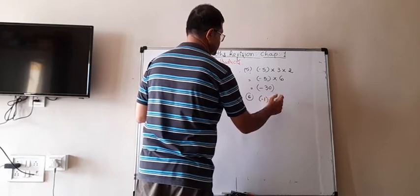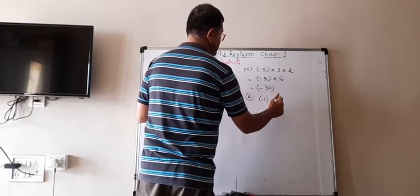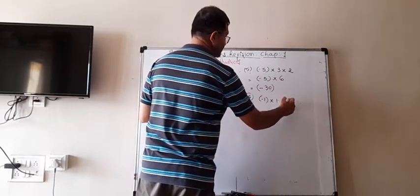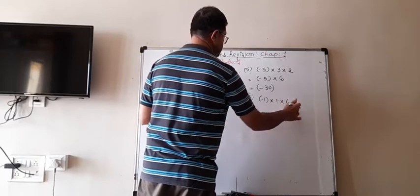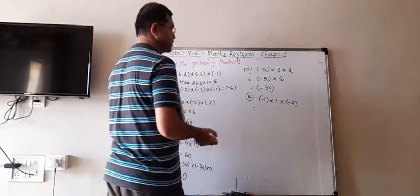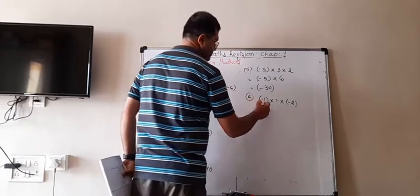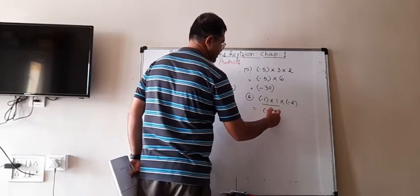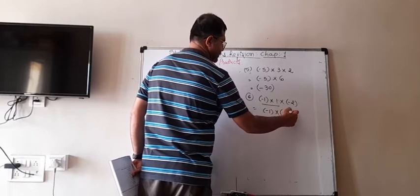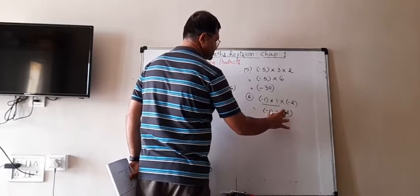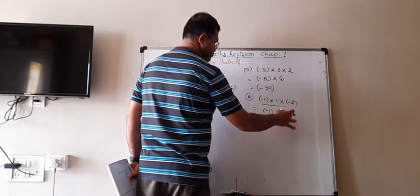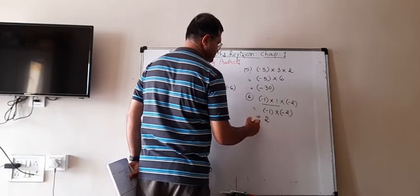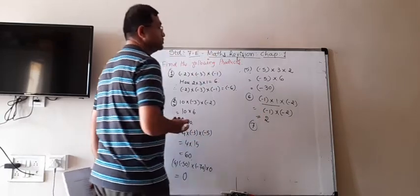Sixth: (-1) × 1 × (-2). First, (-1) × 1 = -1. Then (-1) × (-2): minus × minus = plus, so 1 × 2 = 2. The answer is +2.